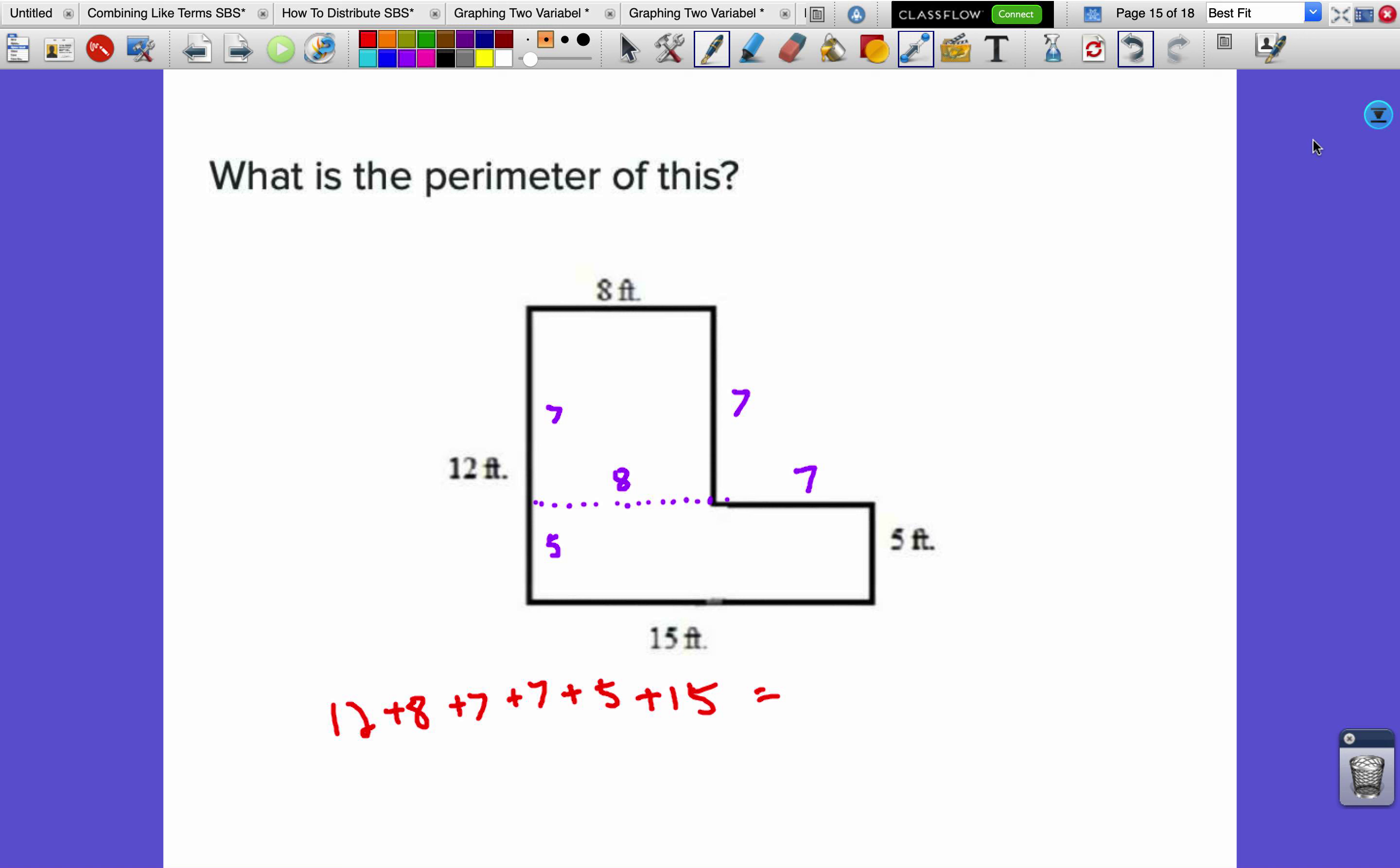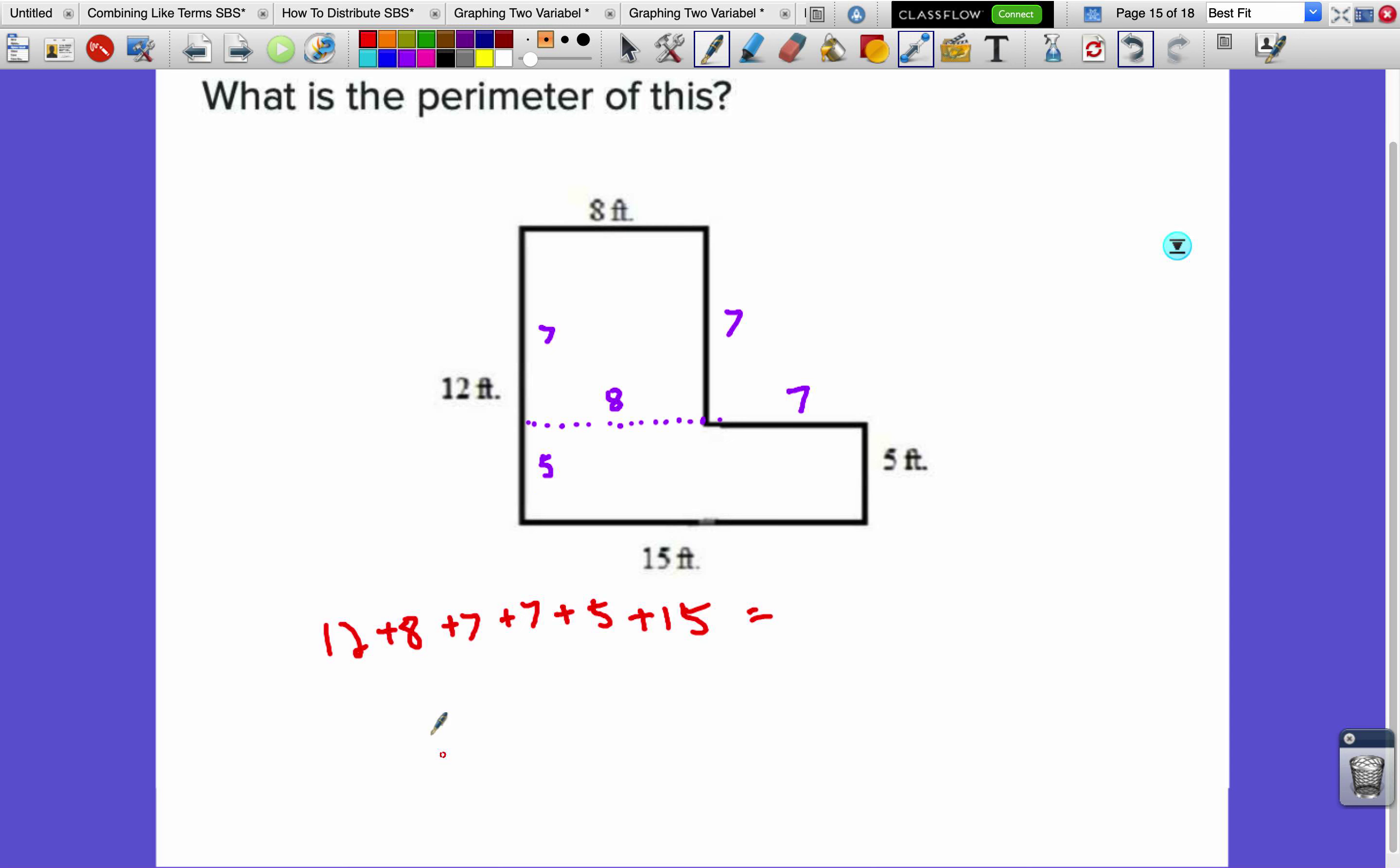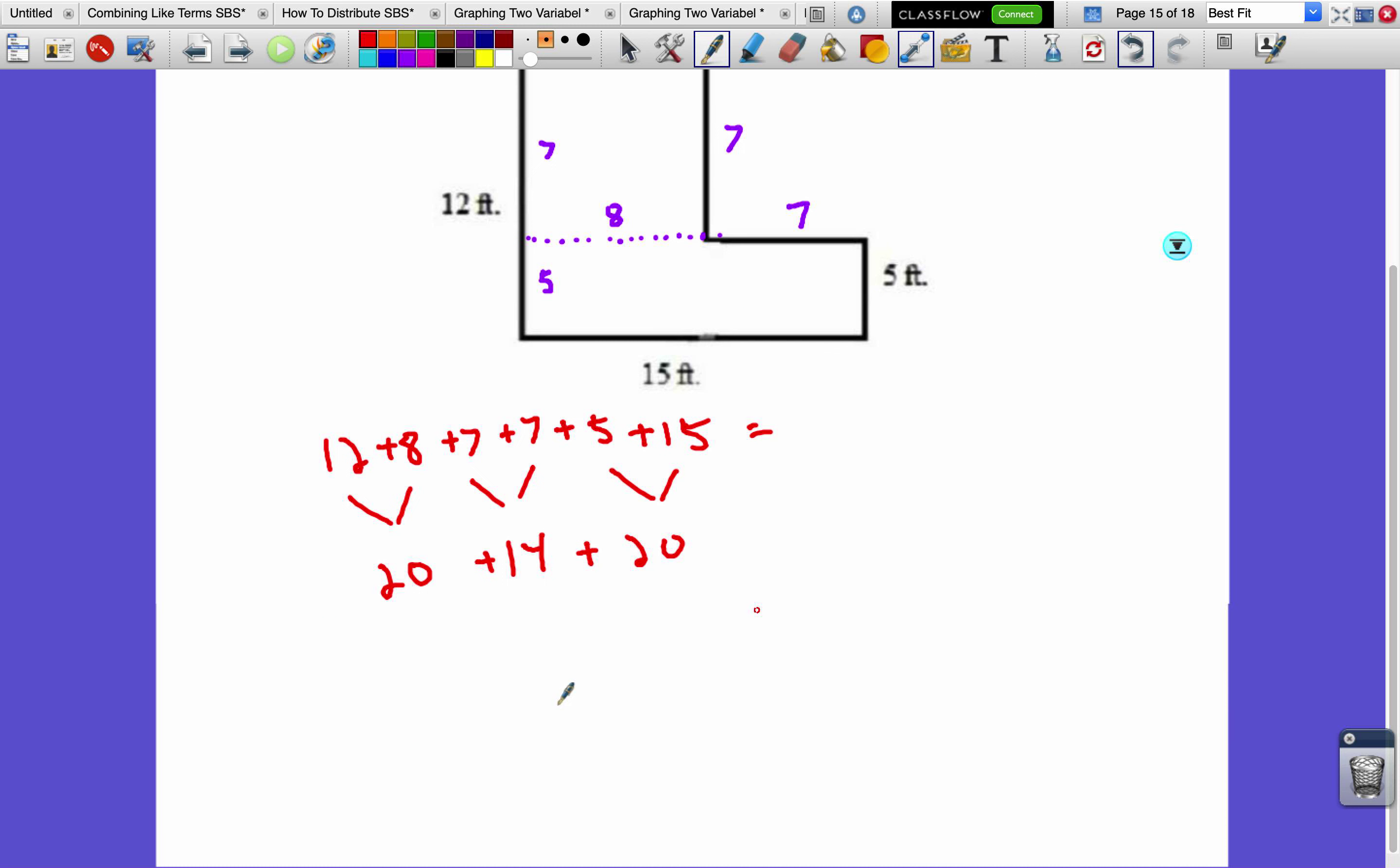Let's calculate this. 12 and 8 make 20, 7 and 7 are 14, 5 and 15 are also 20. That's 34 plus 20 equals 54. Then we give it a unit - the unit here is feet. If we don't say a specific unit, then we just say units.